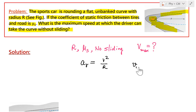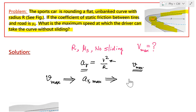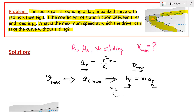Since acceleration in the radial direction is directly related to velocity, maximizing velocity means maximizing the acceleration. And since force equals mass times acceleration, maximizing acceleration means the force in the radial direction — that is, towards the center — will also be maximum. So we need the maximum possible centripetal force.